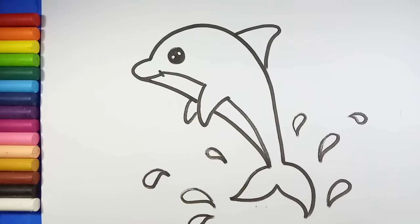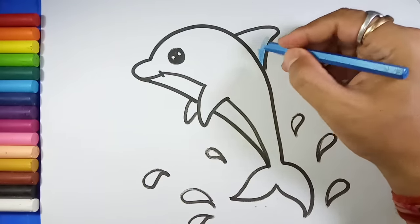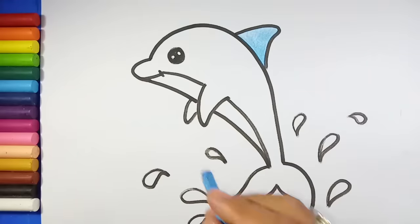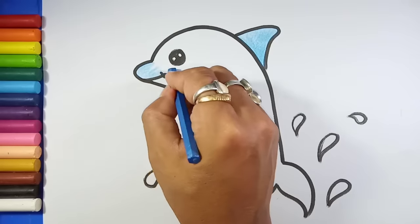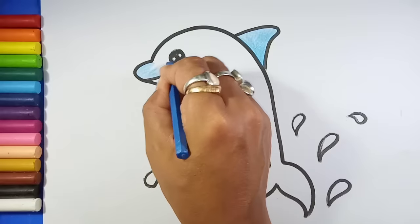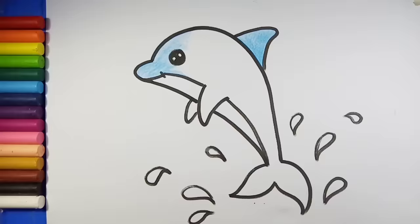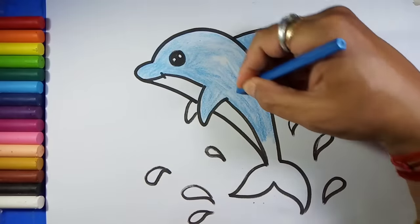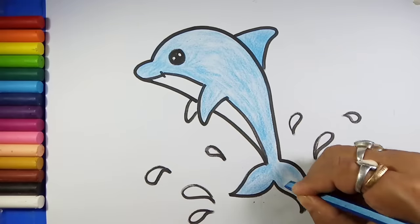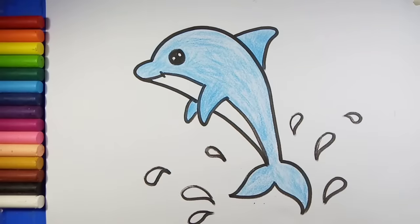So our dolphin is ready. Now let's color it. Take blue and start coloring over it this way. Now use dark blue.